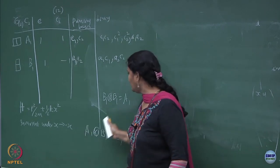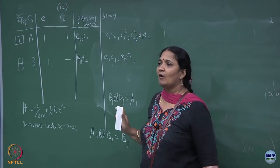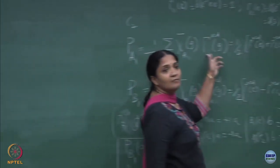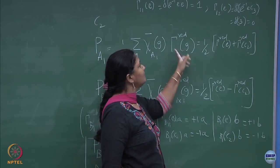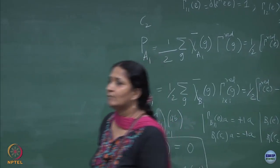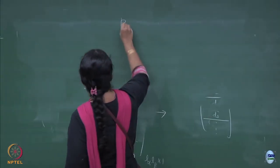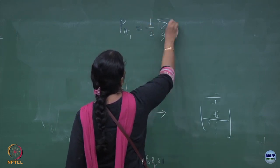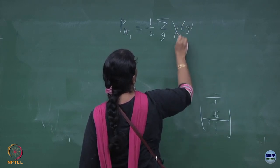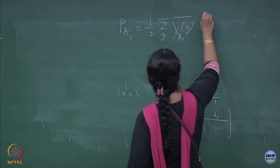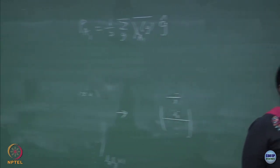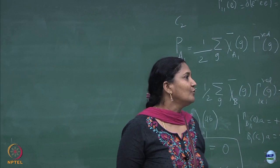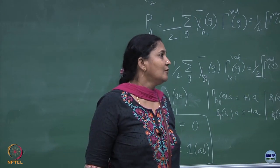In this case it was trivial because they are all one-dimensional, but we will do a non-trivial C3V now. This was with the matrix representations which you can use, but you can also replace this by a formal operator G. You can write P_A1, the projection for the irreducible representation, using the character for the group elements in the representation A1, and put the G operator without worrying about the matrix representations.